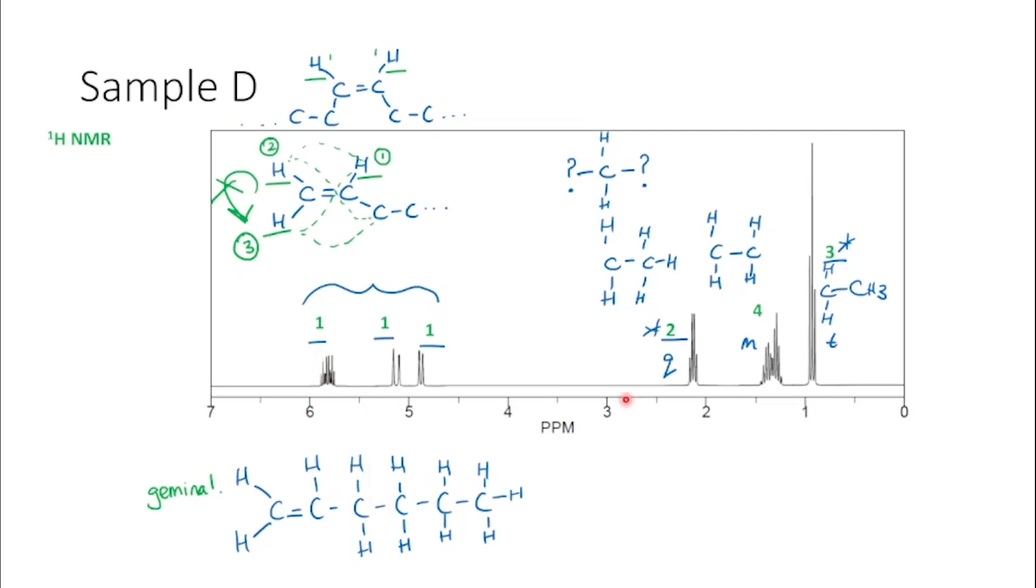And finally, we need to assign these two signals here. So what we look at first is we've assigned our CH3 group. And if we move on to this group here, it would be beside one, two, three, four, five hydrogens. So we would expect to see a sextet here.